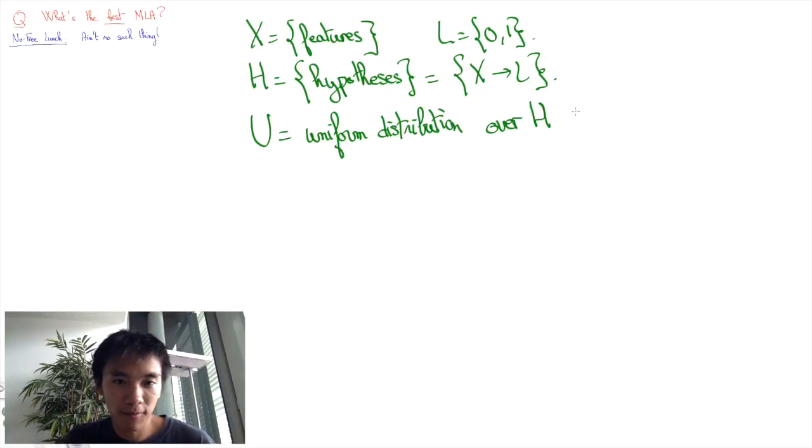In other words, if I draw F from U, then for any X, the probability that F of X is equal to 0 is going to be one-half. Now, consider any sample set S, which is a subset of X.